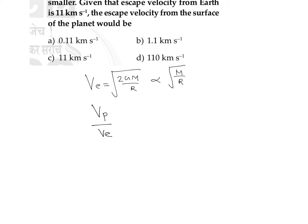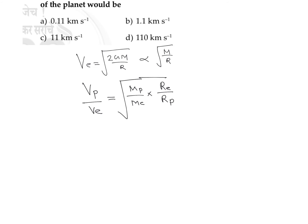We are going to find the escape velocity on that planet and compare it with that of Earth. So, escape velocity on that planet divided by escape velocity on Earth equals the square root of the mass of the planet divided by the mass of Earth, multiplied by the radius of Earth divided by the radius of the planet.